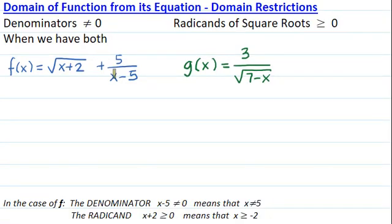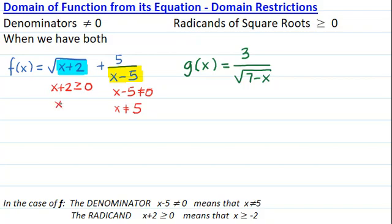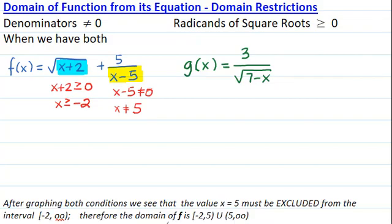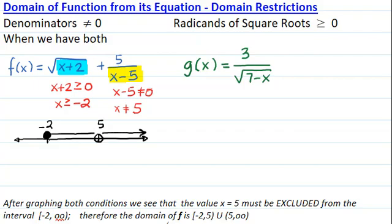In the case of F, we have a denominator x minus 5, and we have a radicand x plus 2. x minus 5 must be not equal to 0, which makes x not equal to 5. And x plus 2 must be greater than or equal to 0, which makes x greater than or equal to negative 2. After graphing both conditions, we see that the value x equal to 5 must be excluded from the interval negative 2 to infinity. Therefore, the domain is closed at negative 2, up to 5, open there, union 5 to infinity.